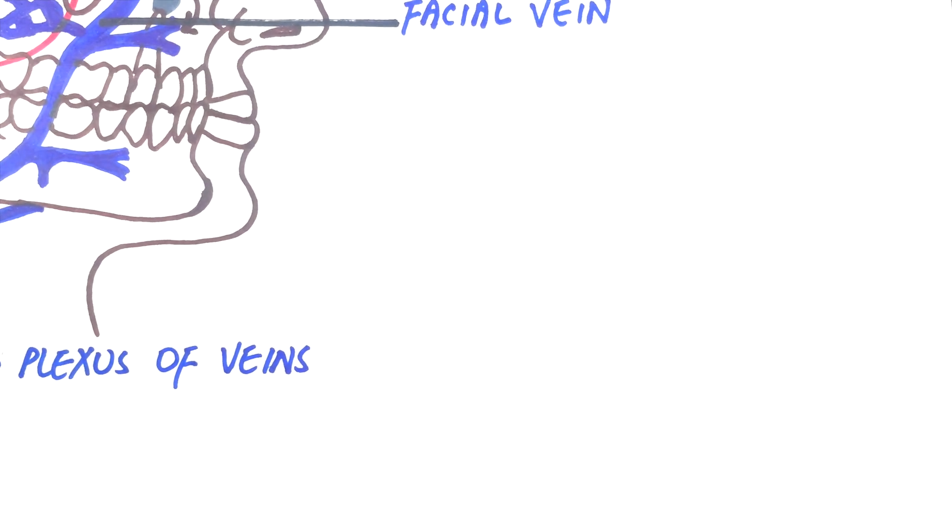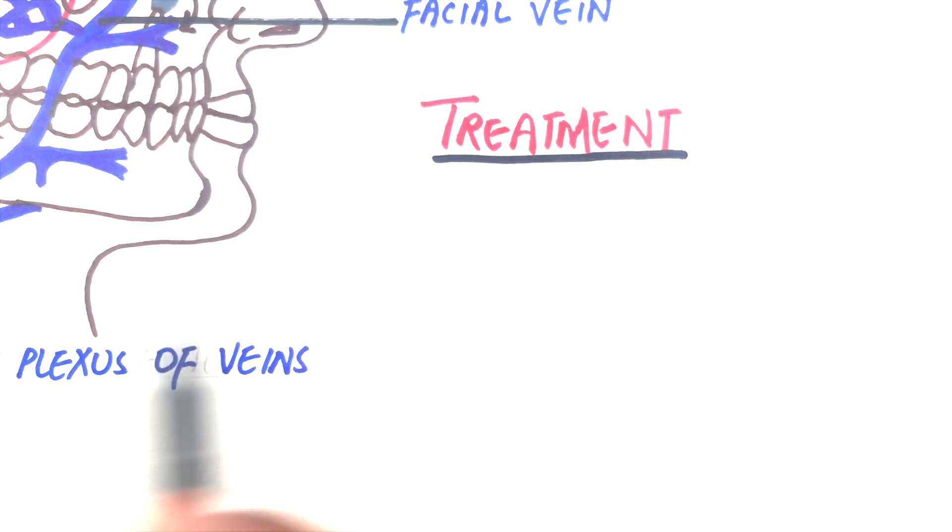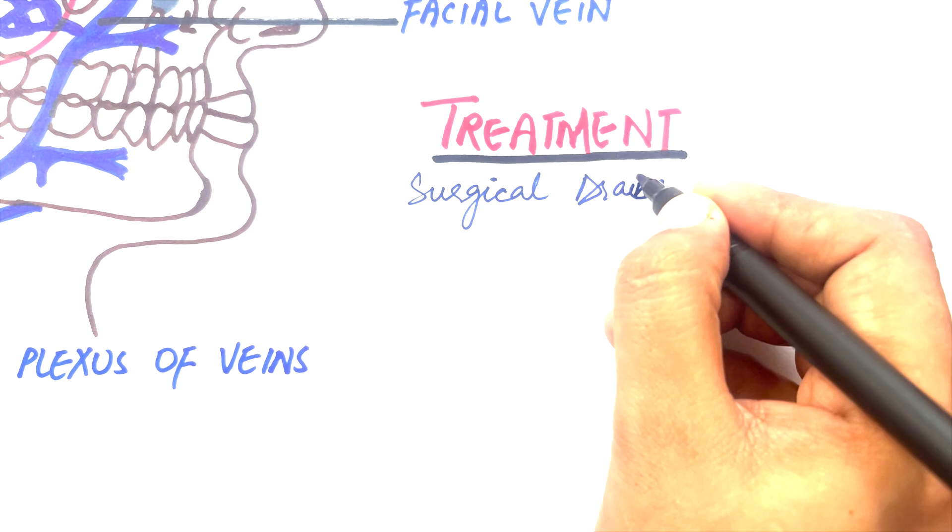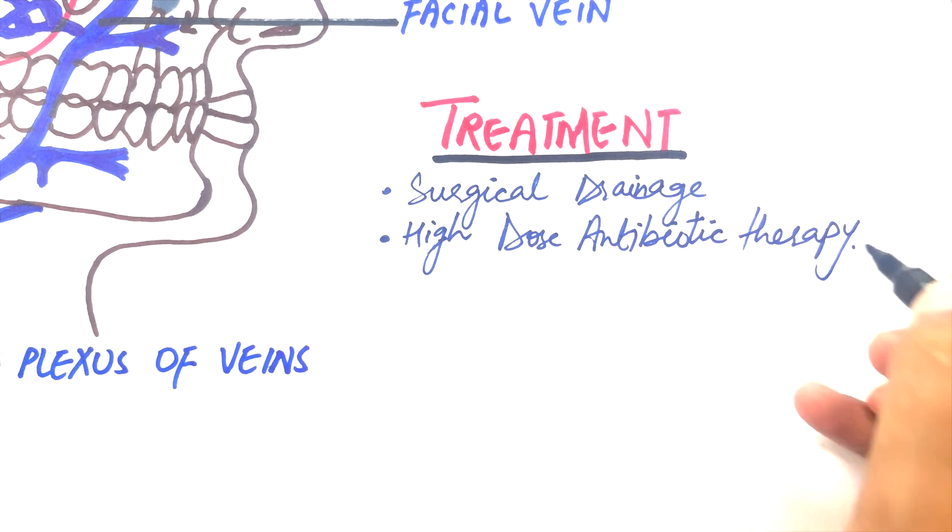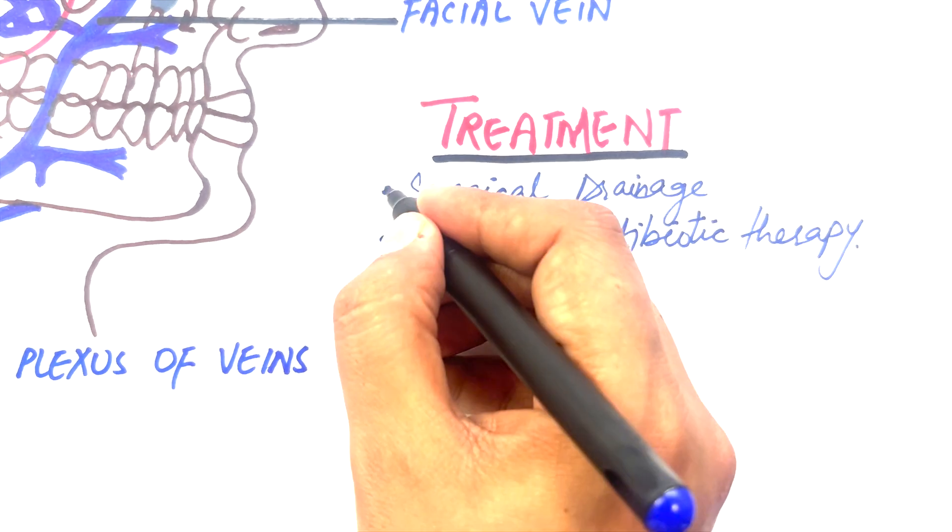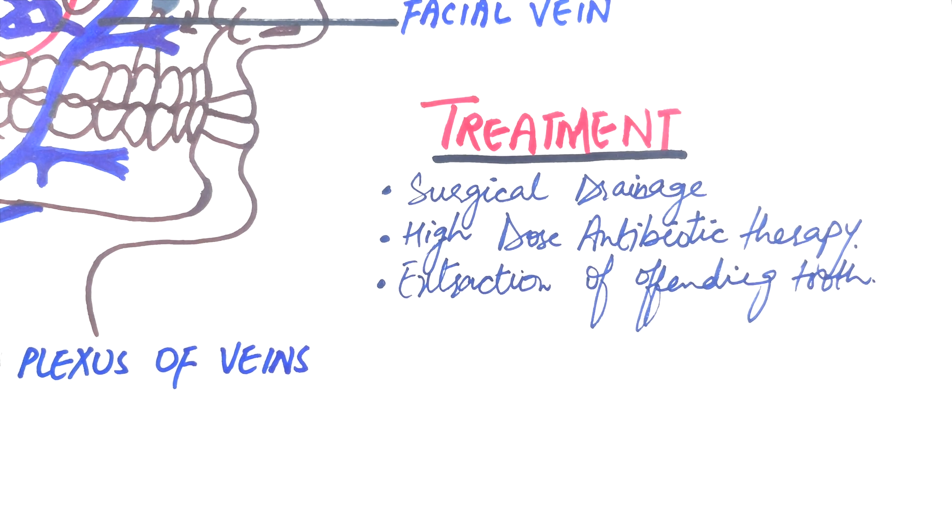Treatment for cavernous sinus thrombosis secondary to dental infection involves surgical drainage combined with high-dose antibiotic medications similar to those administered for patients with Ludwig's angina. Offending tooth should be extracted and drainage is required if fluctuance is present.